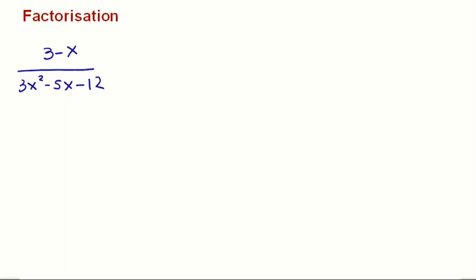Another problem we had on our factorization assignment — the medium difficulty one — was this problem. We don't have any common factors here, so now it's simply sum and product. What we're going to do is first factorize the denominator, and then try to cancel something on top and below. Let's solve that quadratic first.